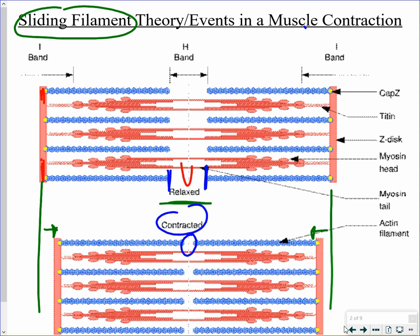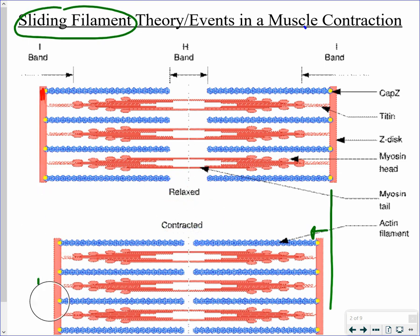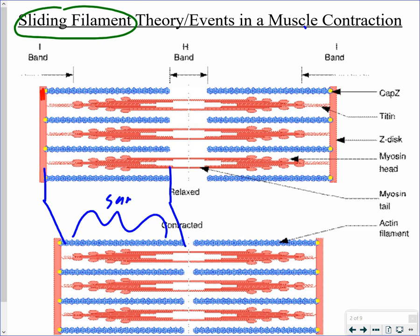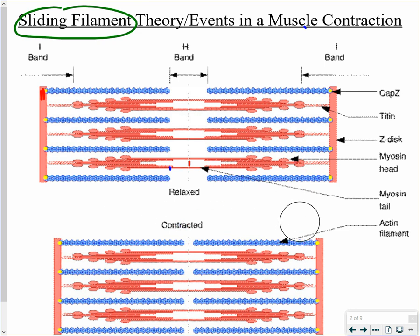If we take a look at the lengths of the individual actin and myosin, what we'll see is that the lengths of them on their own — neither actin nor myosin actually shorten. Here is the length of one of the actins, and if we compare that to the contracted state, it is exactly the same. There is no difference in the length of the actin whether the muscle is relaxed or contracted. The same is true for myosin. So when a muscle contracts, neither actin nor myosin gets shorter. What is happening is one filament is sliding past the other filament.